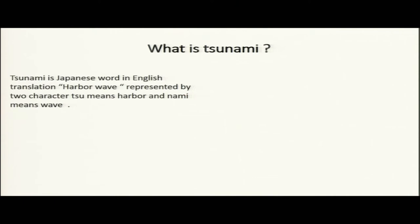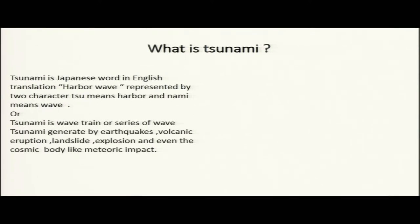Tsunami is a Japanese word; in English translation it means harbor wave, represented by two characters. 'Tsu' means harbor and 'Nami' means wave. It can also be called a wave train or series of waves. Tsunami can be generated through various sources — from earthquake, volcanic eruption, series of submarine landslides, nearby explosions, or even a meteoritic impact, which is a very rare case.